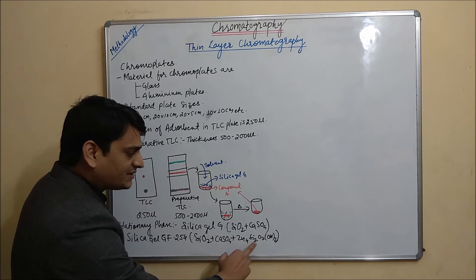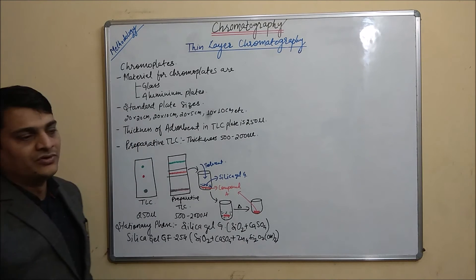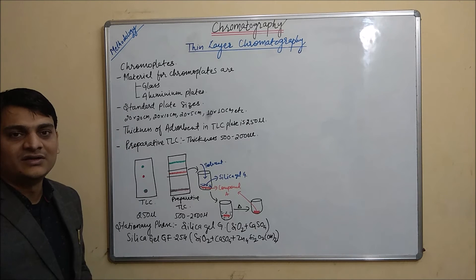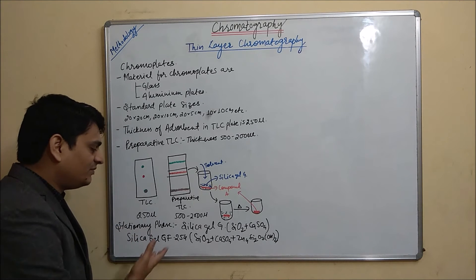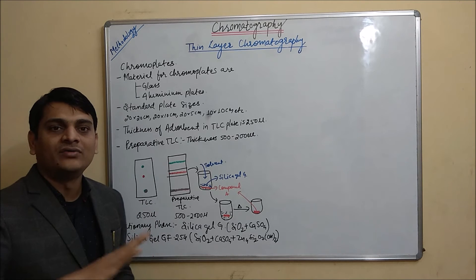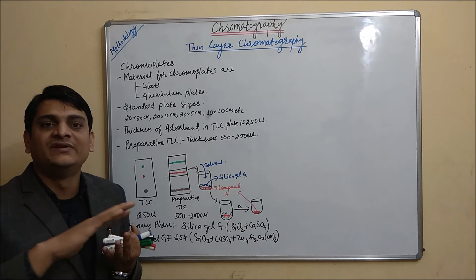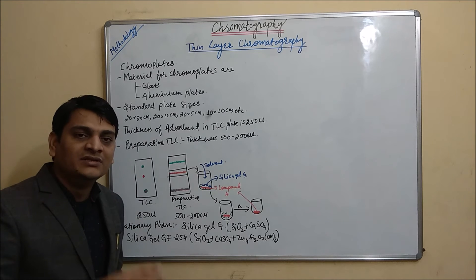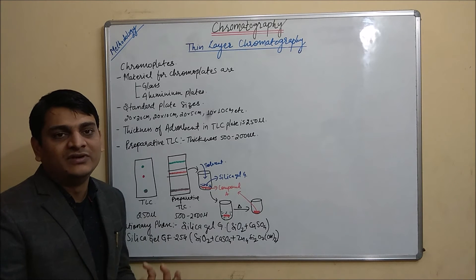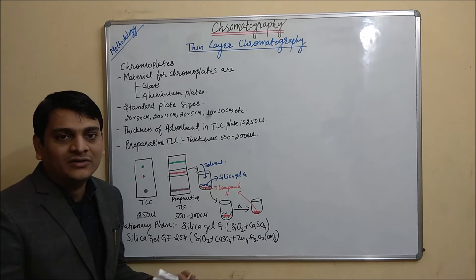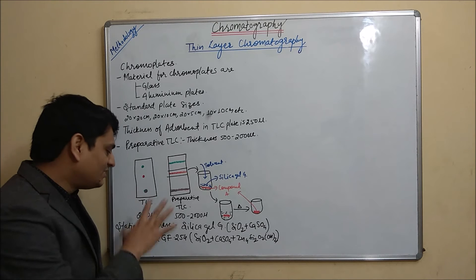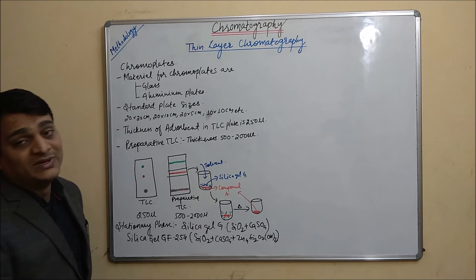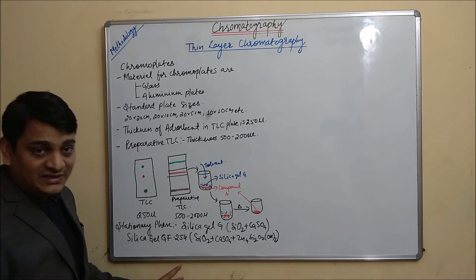Zinc silicate has the formula Zn4SiO7. Silica gel GF254 will give green color fluorescence at 254 nanometers. So the whole stationary phase background will give fluorescence, and that spot will be easily identified. So silica gel G and GF254 are the commonly used stationary phases in TLC.